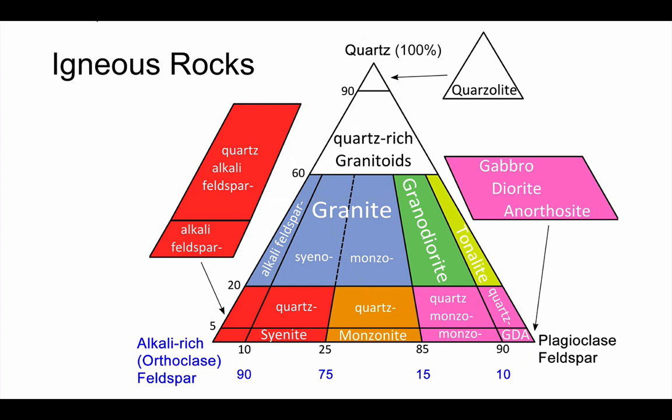Another application of a similar type of diagram is a classification of igneous rocks. This is known as a QAP diagram. You can see the three points here are quartz, alkali-rich or orthoclase feldspar, and plagioclase feldspar. You'll notice, though, the lines on this graph don't run in the same direction as the lines on a more traditional triangular graph.